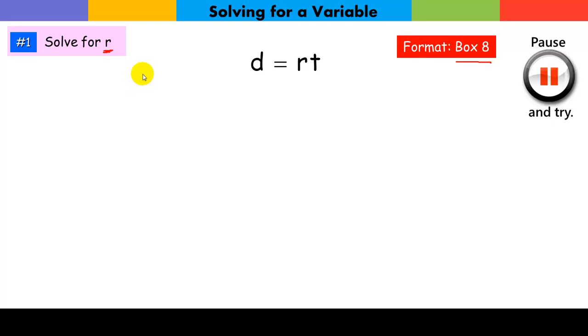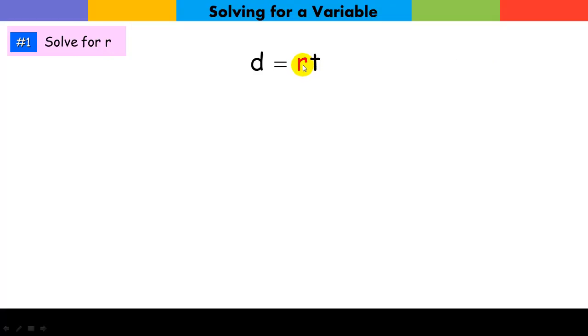To solve for r, I'm going to highlight this r right here. And when I highlight this, it just lets me know that I want to get rid of this t. Because I'm saying r times t. How do I get rid of this t? I divide by t. If I divide this side by t, I divide this side by t. t over t is 1. I now have r alone on this side. r equals d over t. Easy peasy.